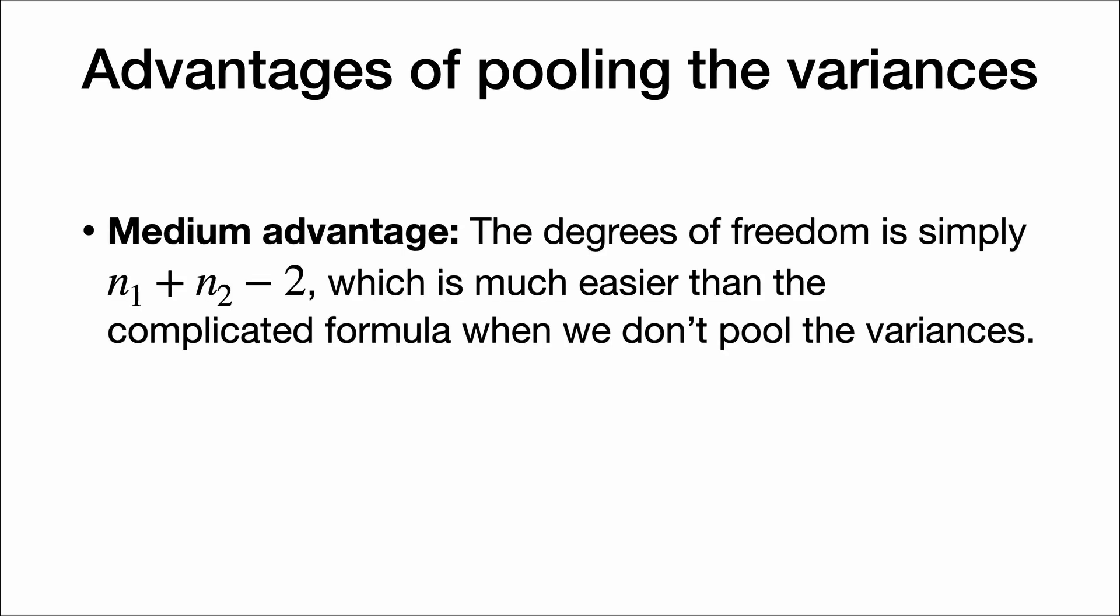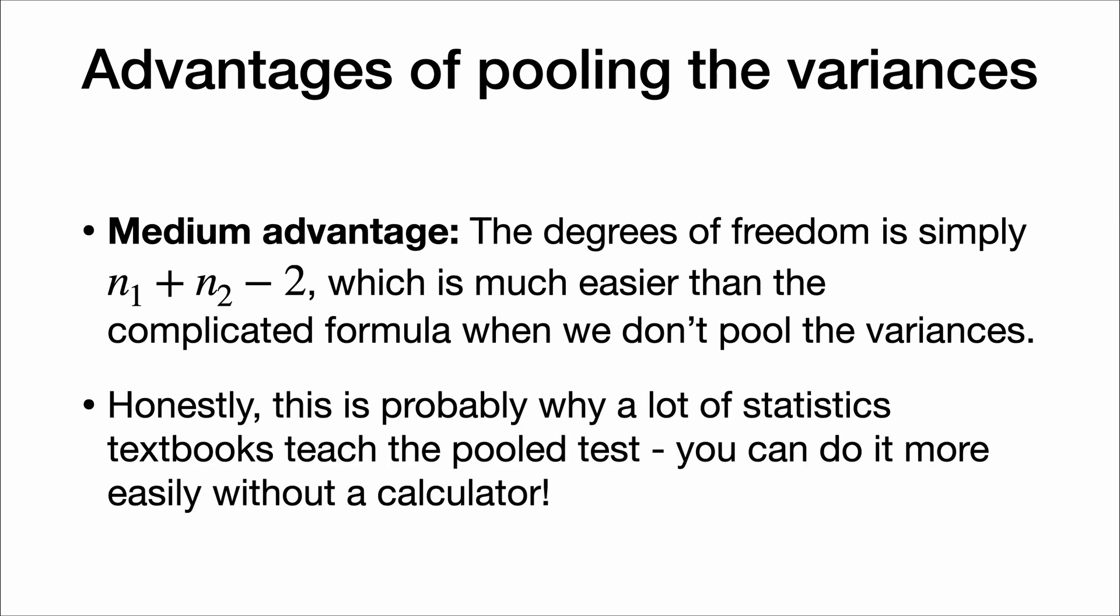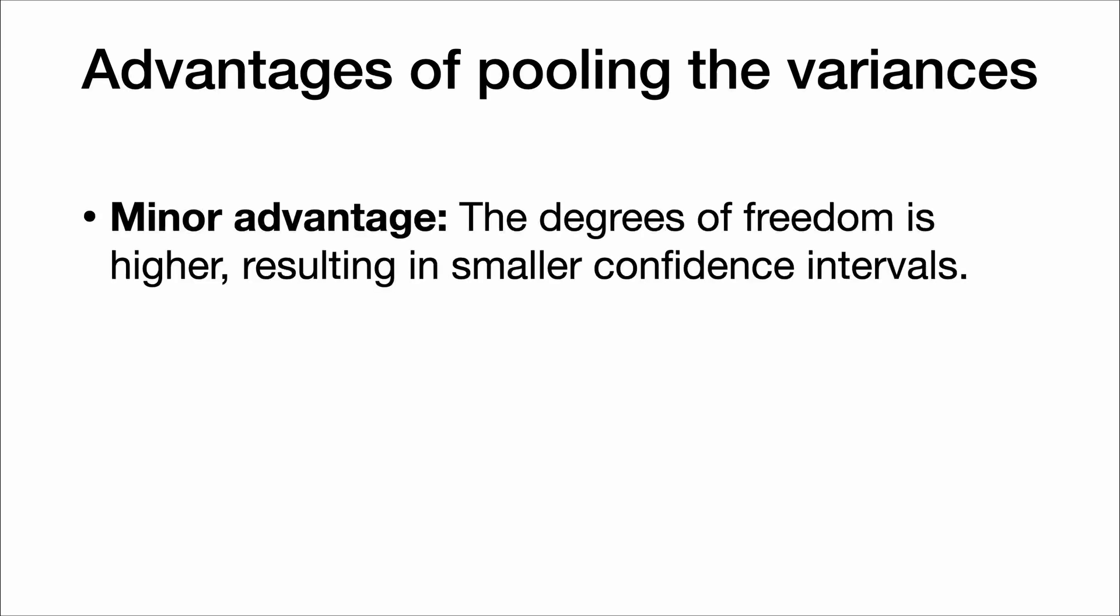There are some smaller advantages, too. The degrees of freedom for the pooled test is simply n1 plus n2 minus 2, which is much easier than that crazy complicated formula when we don't pool the variances. And honestly, this is probably why a lot of statistics textbooks teach the pooled test. You can do it more easily without a calculator. And a minor advantage is that the degrees of freedom is higher, resulting in smaller confidence intervals.